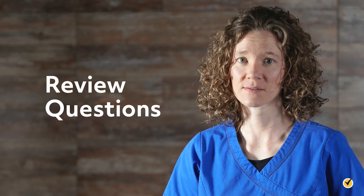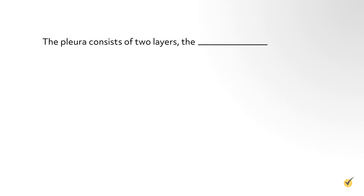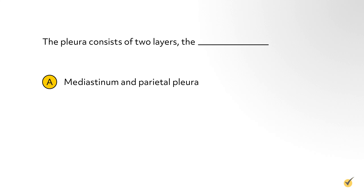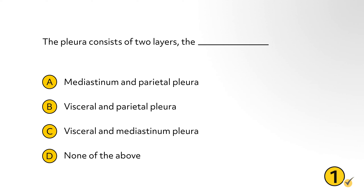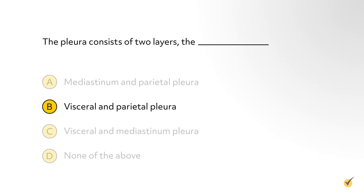Let's review by going over a few questions. The pleura consists of two layers. A: mediastinum and parietal pleura. B: visceral and parietal pleura. C: visceral and mediastinum pleura. Or D: none of the above. If you chose B, you're correct.